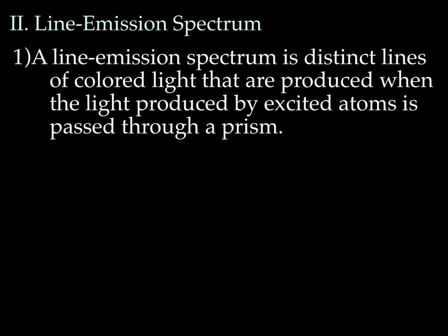Line emission spectrum. A line emission spectrum is distinct lines of colored light that are produced when the light produced by excited atoms is passed through a prism. Alright, so here's basically what's happening. If anyone's ever seen a crystal held up to the sunlight, where you get that kind of rainbow effect going on, a crystal is a form of a prism. And sunlight is a mixture of all the colors of light. So when that sunlight hits the prism or the crystal, that light is separated into its different colors of light. And that's basically what a line emission spectrum is.